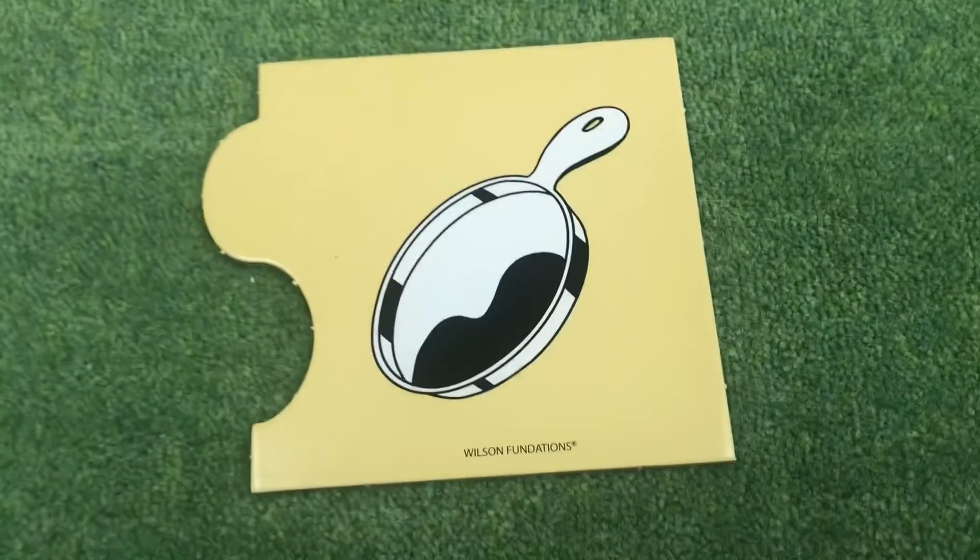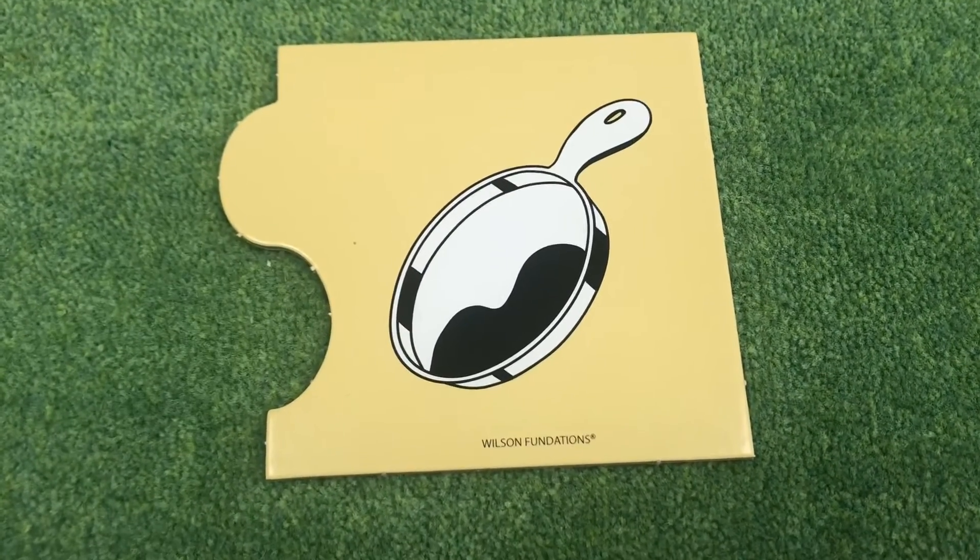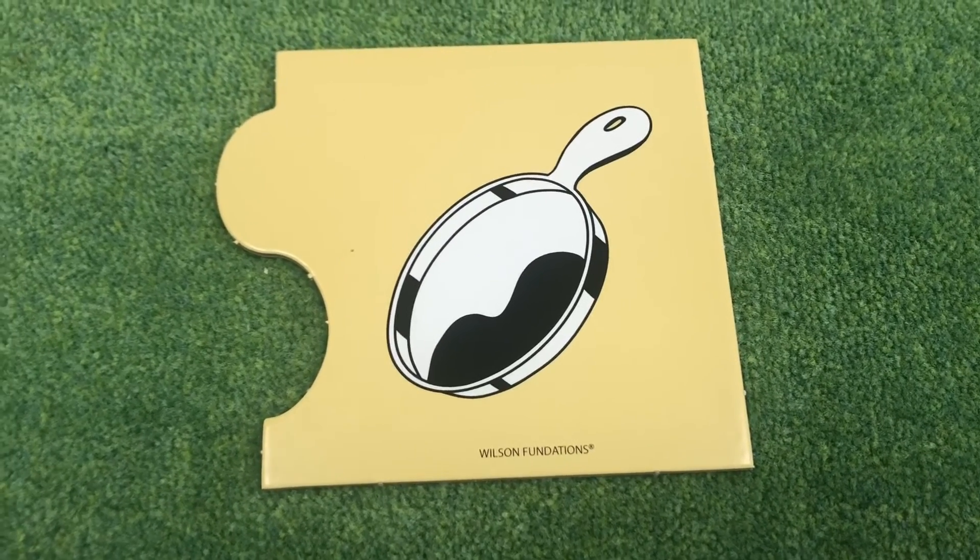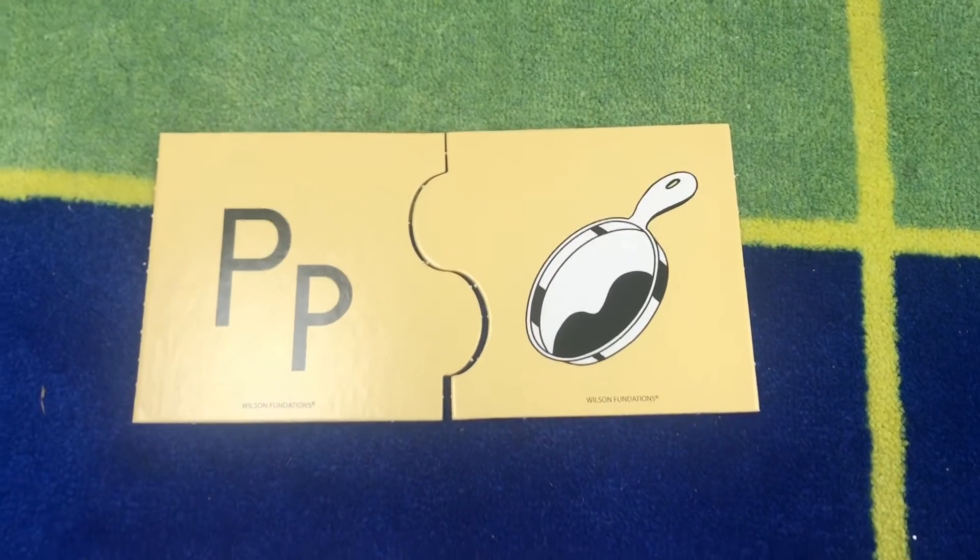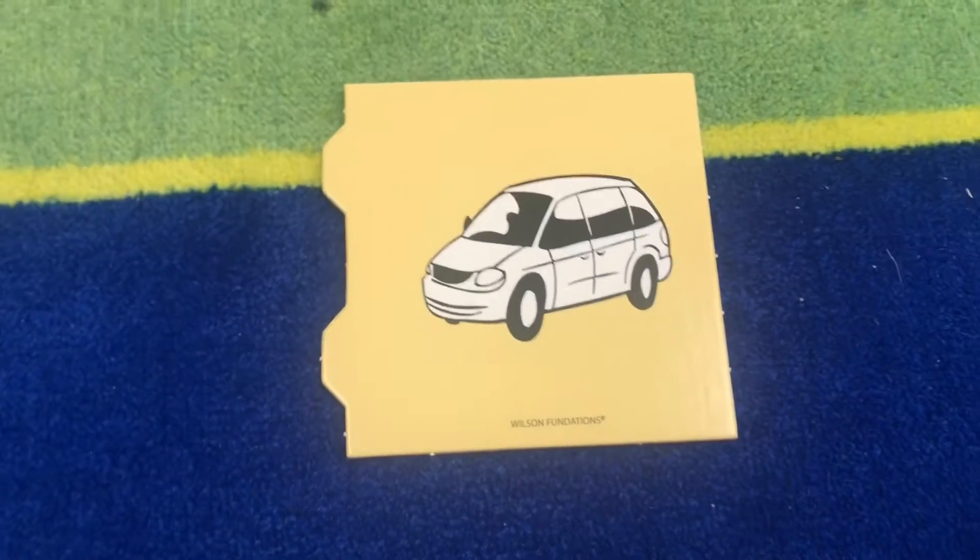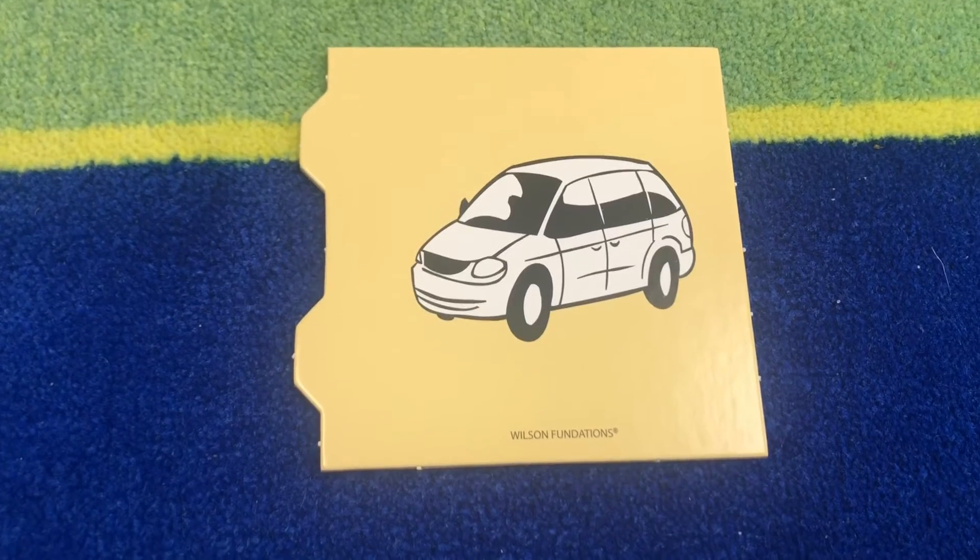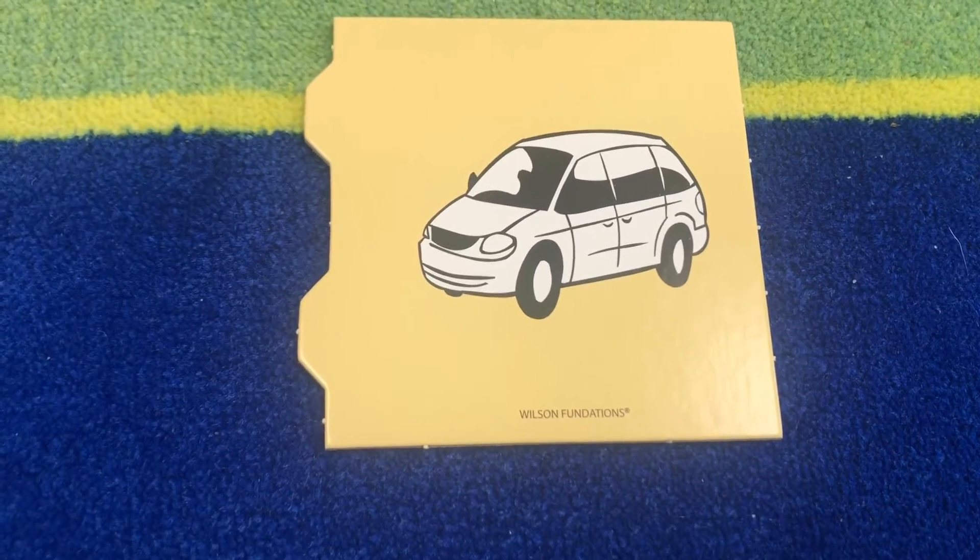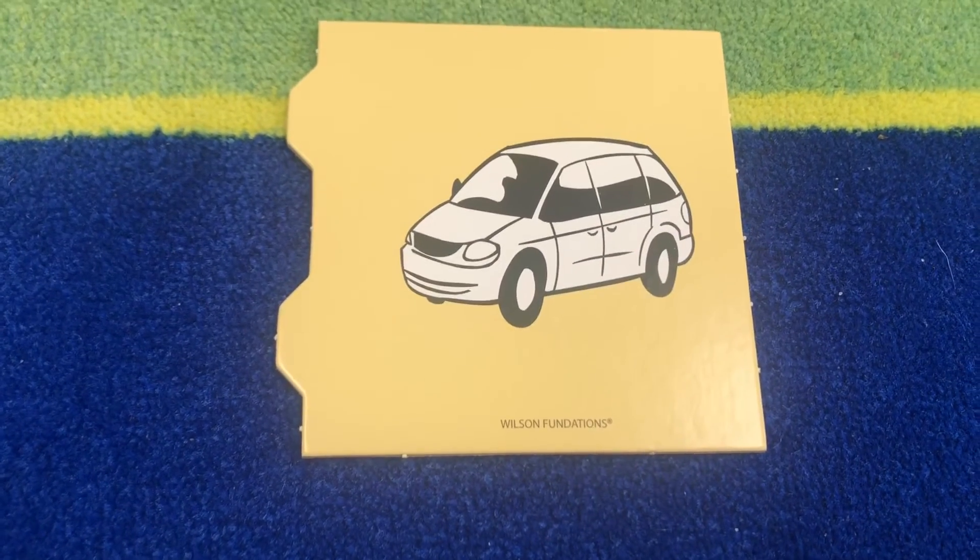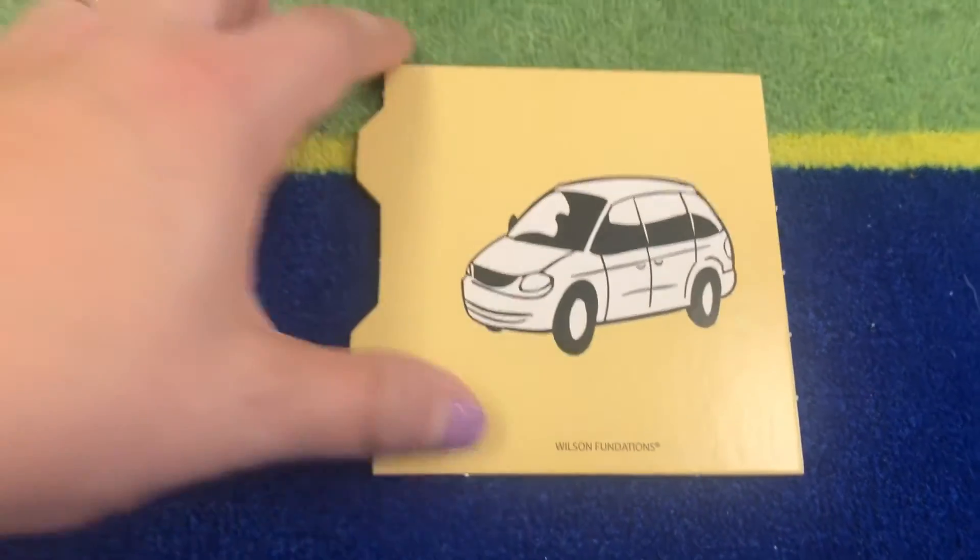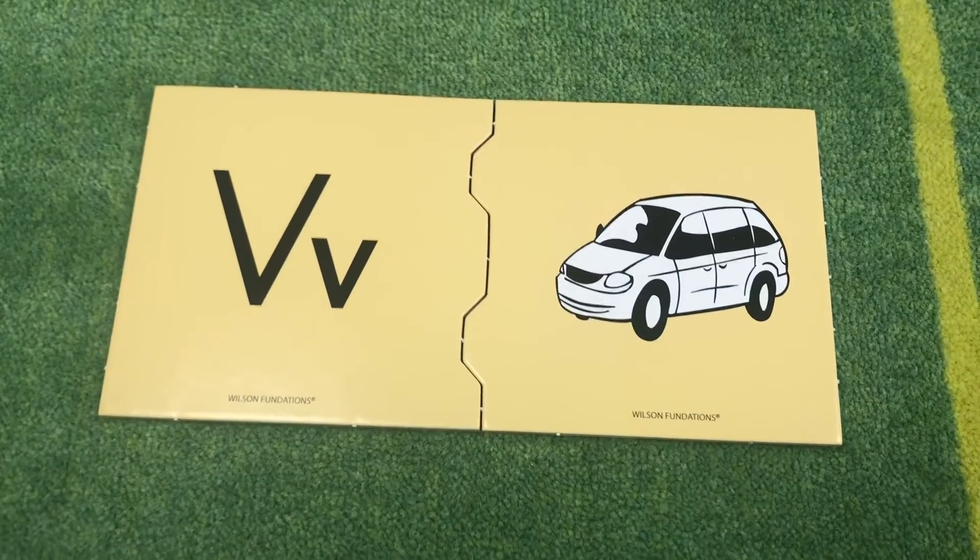What is this a picture of? It's a pan. What does pan start with? P. A P. P, pan. What is this a picture of? This is a van. Say van. What does van start with? V is correct. V, van.